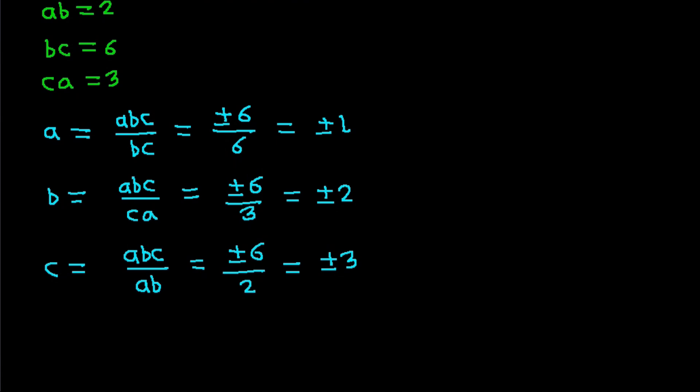So we get ABC is equal to 1, 2, 3 and negative 1, negative 2, negative 3. These are the two values of ABC.